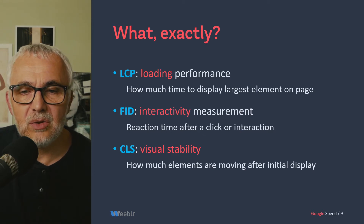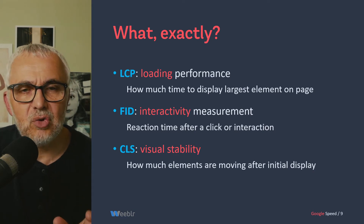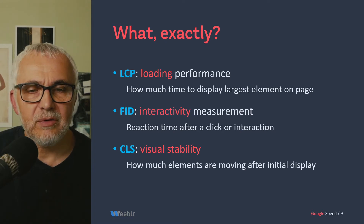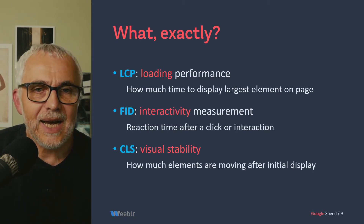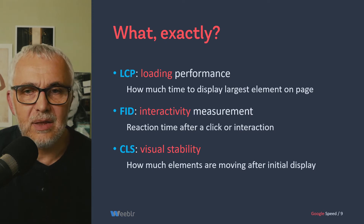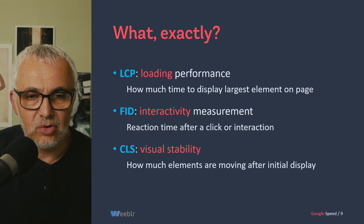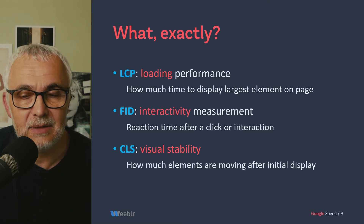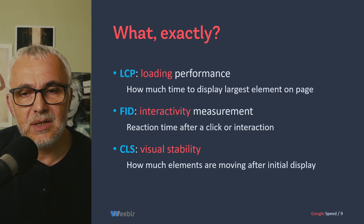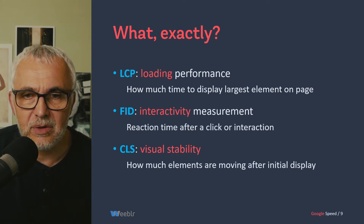The third value is called the cumulative layout shift, or CLS. That's the one I prefer — it measures the visual stability of the page. When you arrive on a page and you want to click on a link, but an ad or a large image loads and pushes down what you are reading, you end up having to scroll back or you accidentally click on something you didn't want to — typically an ad. CLS is a number that characterizes how much the page content is moving around after the page has loaded.